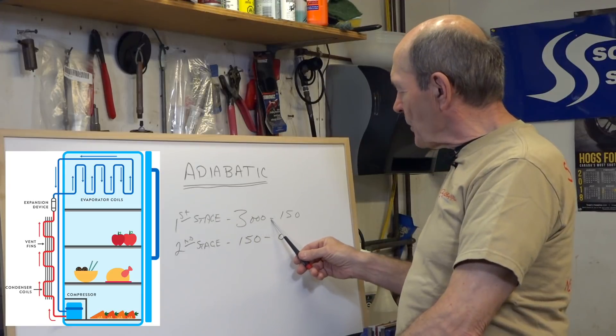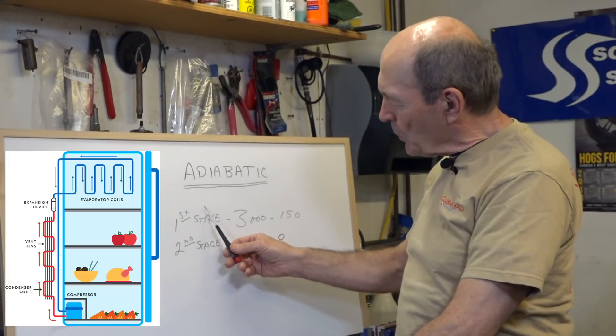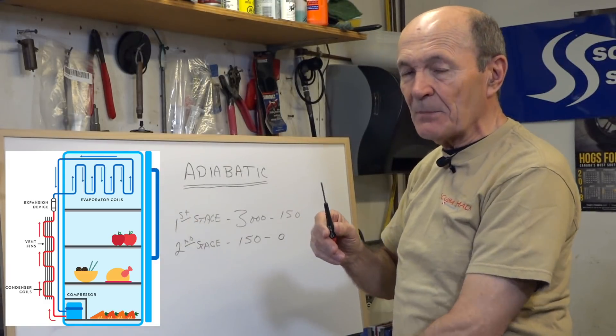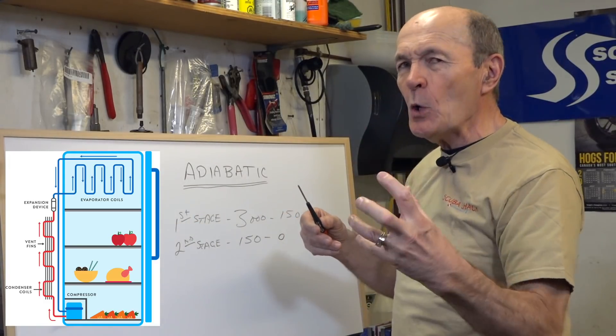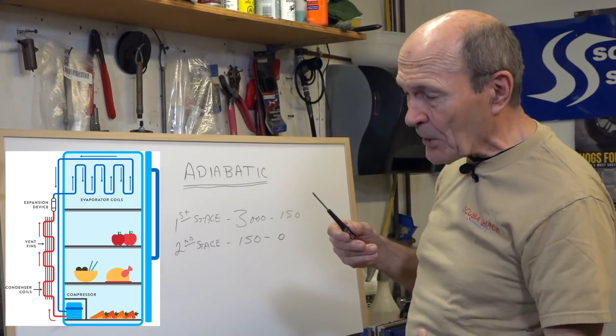First stage, first pressure drop, 3,000 to 150. Second stage, second pressure drop, 150 to zero. So in your regulator, you actually have two of these expansion devices, if you like. Two opportunities for the gas pressure to decrease, and the temperature to decrease.